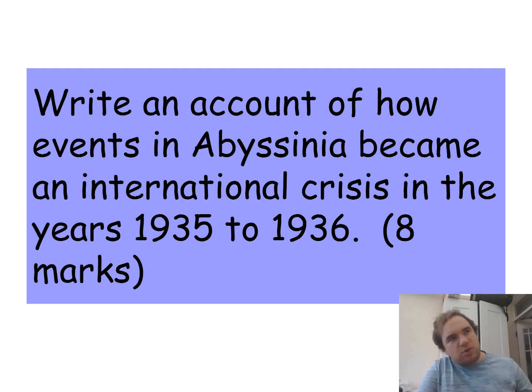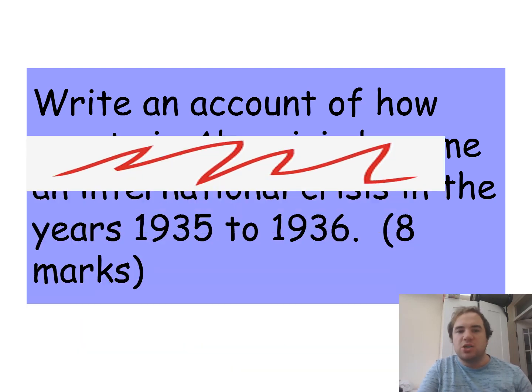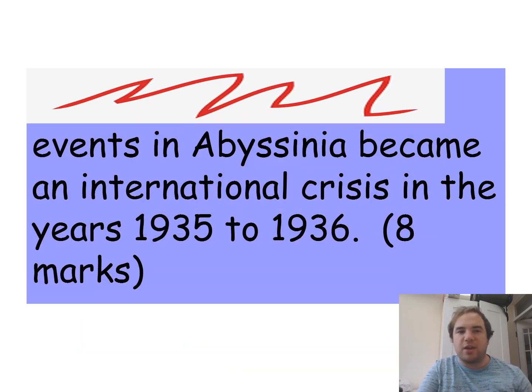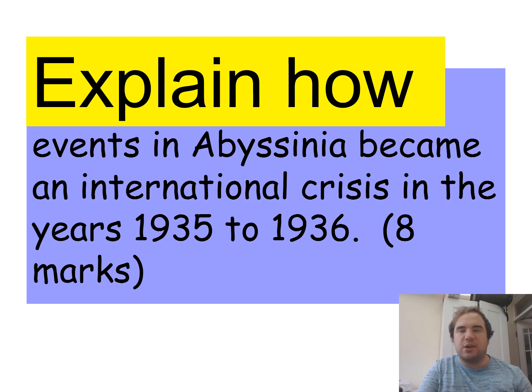The better way actually that I would work this question if I was in the classroom is, instead of thinking write an account, just scribble that out and instead think of it being phrased as explain how events in Abyssinia became an international crisis in the years 1935 to 1936.